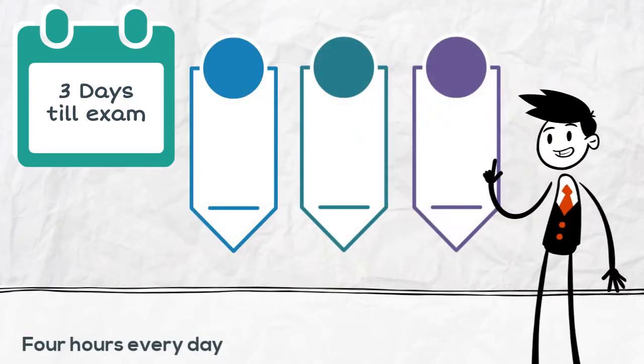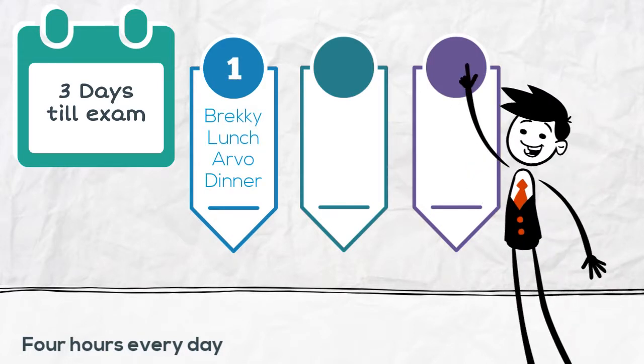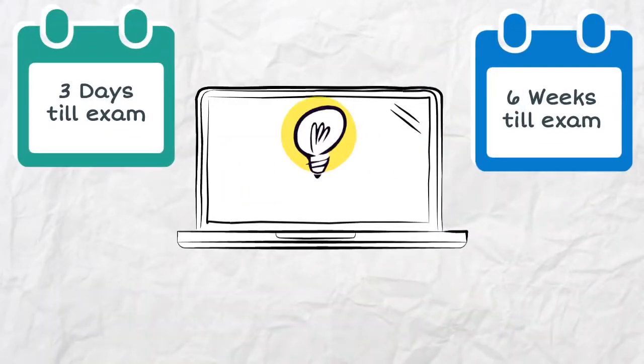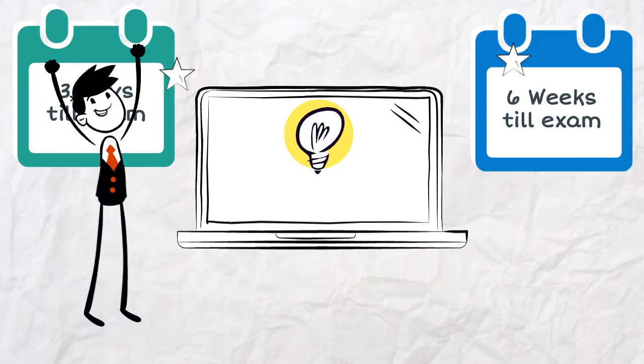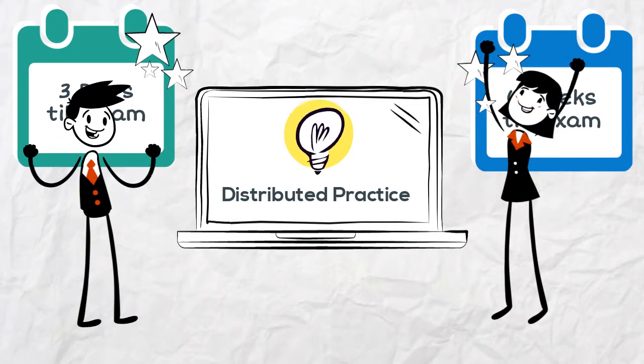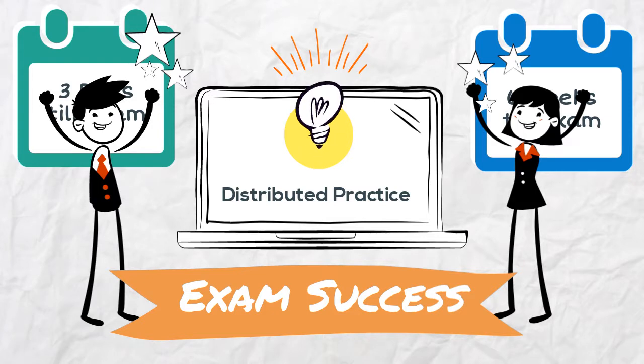He needs to study for four hours per day, but can divide this up such as studying one hour at breakfast, before lunch, in the afternoon, and after dinner. This way both Billy and Susan can take advantage of distributed practice, allowing them to consolidate new information to ensure exam success and so that they don't forget it after the exam.